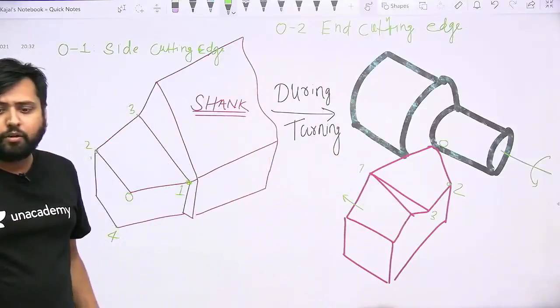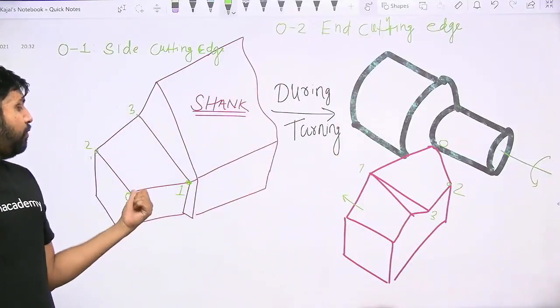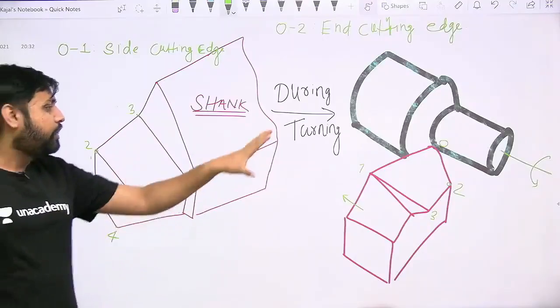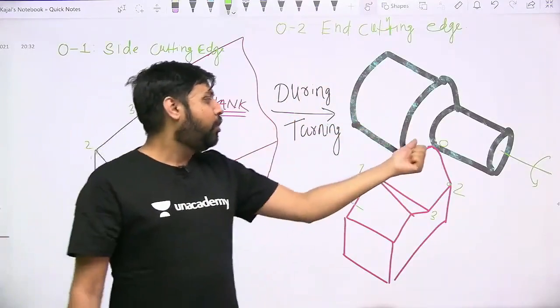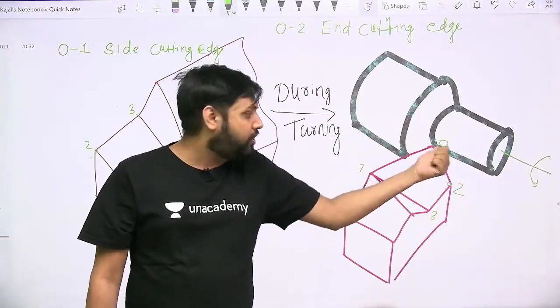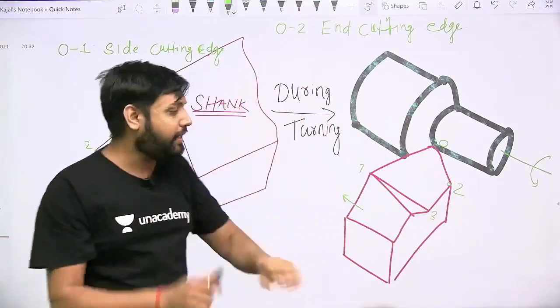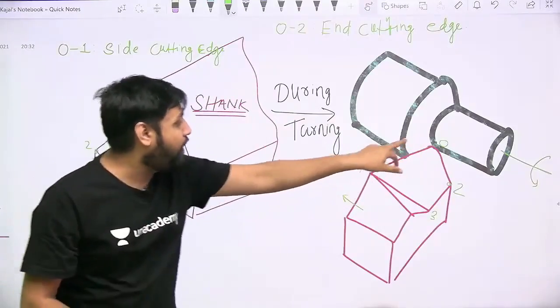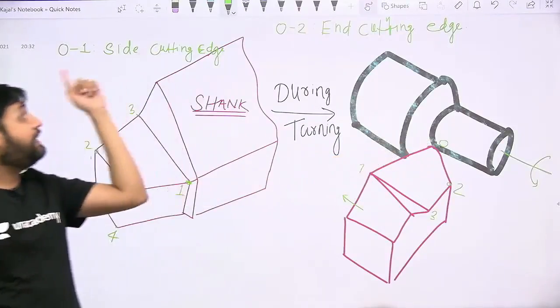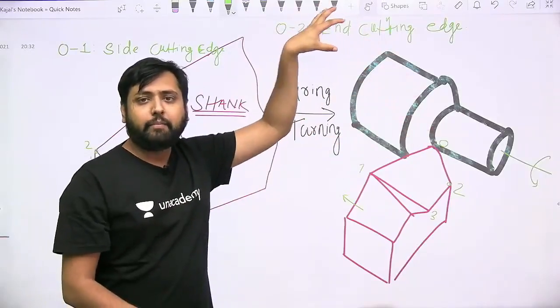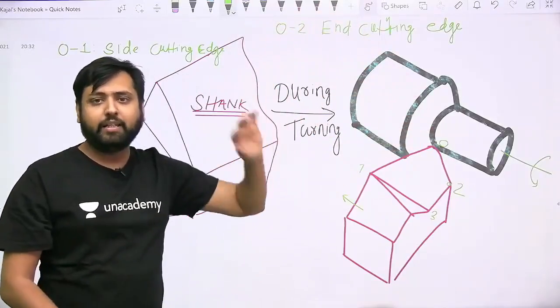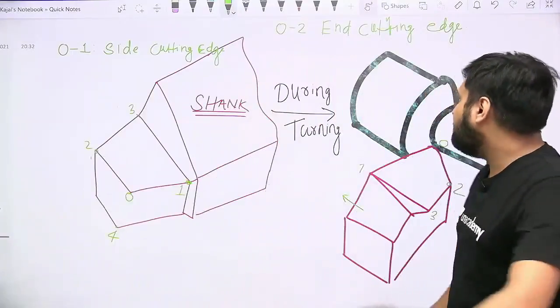Students, if you observe closely, what do you see? Out of 01 and 02, which one is cutting the workpiece mainly? You can observe this is the 01 cutting edge, that is the side cutting edge, which is actually majorly cutting the workpiece.